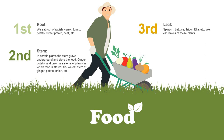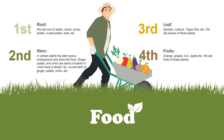Next is leaf. Spinach, lettuce, trigonella, etc. — we eat the leaves of these plants. Next are fruits. Orange, grapes, kiwi, apple, etc. — we eat the fruits of these plants.